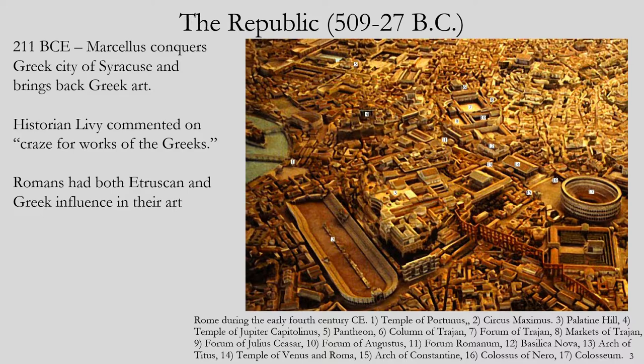By conquering the Greeks — once a great civilization that brought the world classical Greek philosophy, mathematics, culture, and architecture — the Romans admired the Greeks and wanted to incorporate these styles into their own culture. The historian Livy commented on this craze for the works of the Greeks, with Greek influence coming in from all sorts of corners.